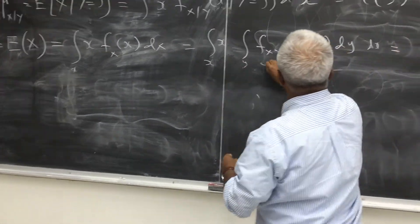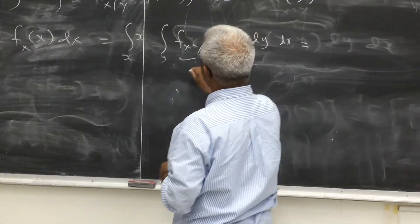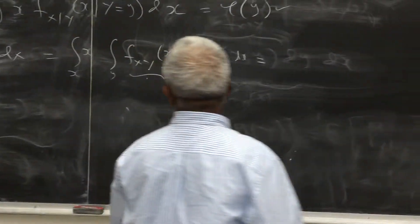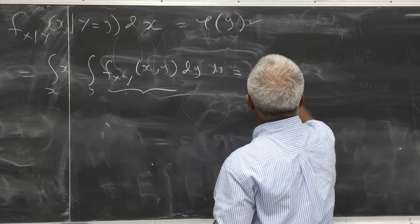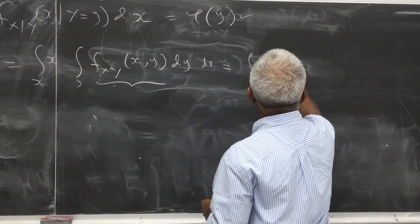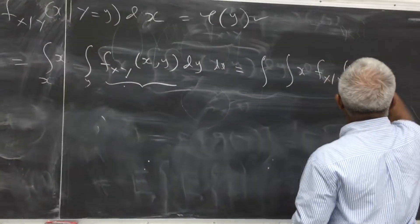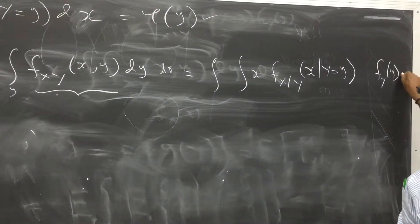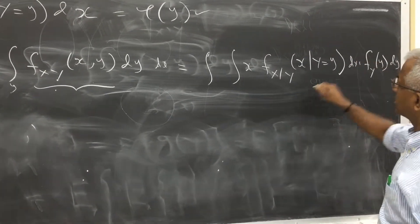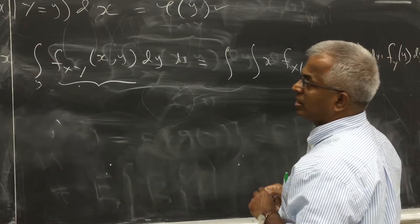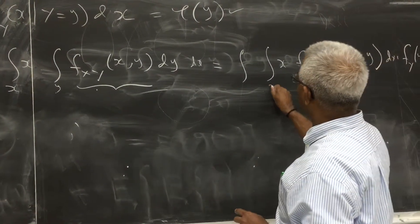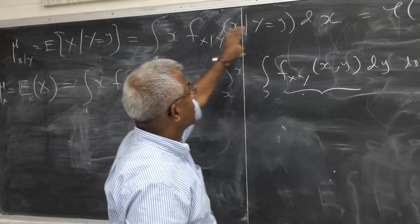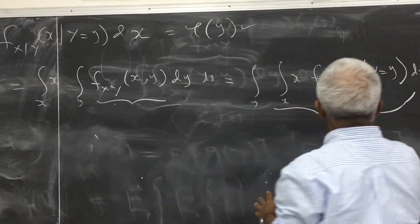Now in the next step, let me replace the joint density function using the conditional formula. So notice that I can write this as two integrals: the conditional density f(X|Y) multiplied by f(Y,Y) dY, and then dX. If I flip the integration order and do the X integration first, this is exactly the conditional mean of X.